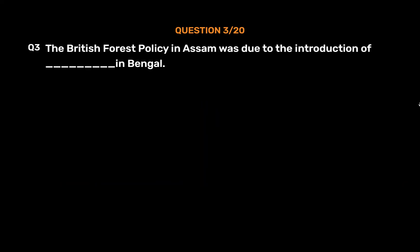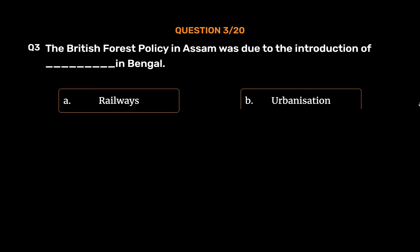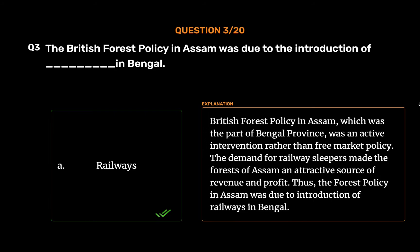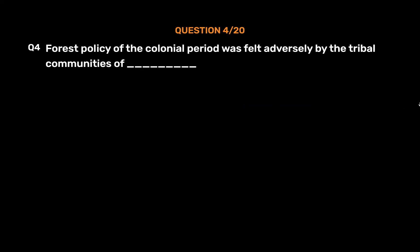Question 3: The British forest policy in Assam was due to the introduction of _____ in Bengal. Options: A. Railways, B. Urbanization, C. Global markets, D. Capitalism. The correct answer is Option A: Railways. British forest policy in Assam, which was part of Bengal province, was an active intervention. The demand for railway sleepers made the forests of Assam an attractive source of revenue and profit.